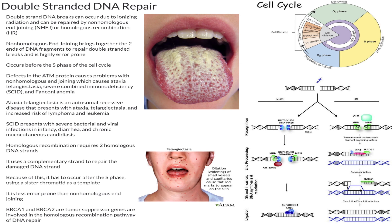Many of you have heard of the BRCA genes. Those genes are tumor suppressor genes that are involved in homologous recombination, and defects in them can lead to breast and ovarian cancer.